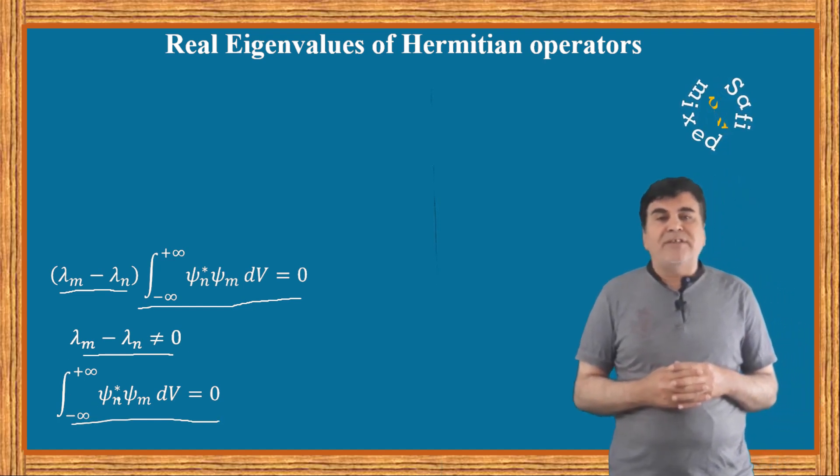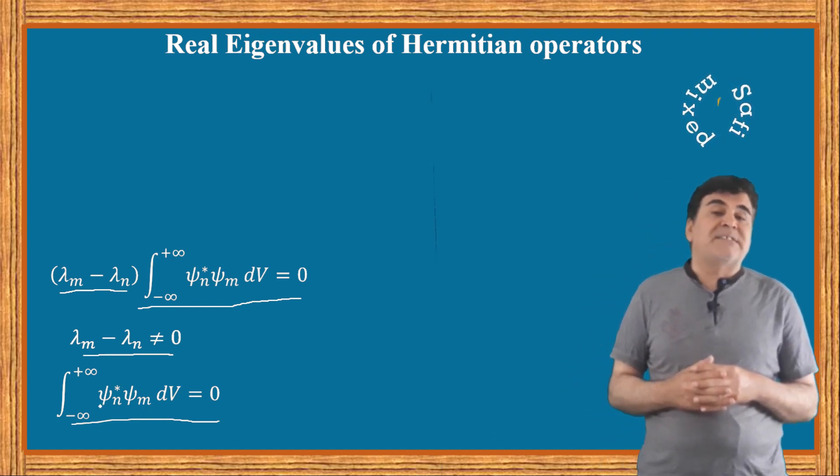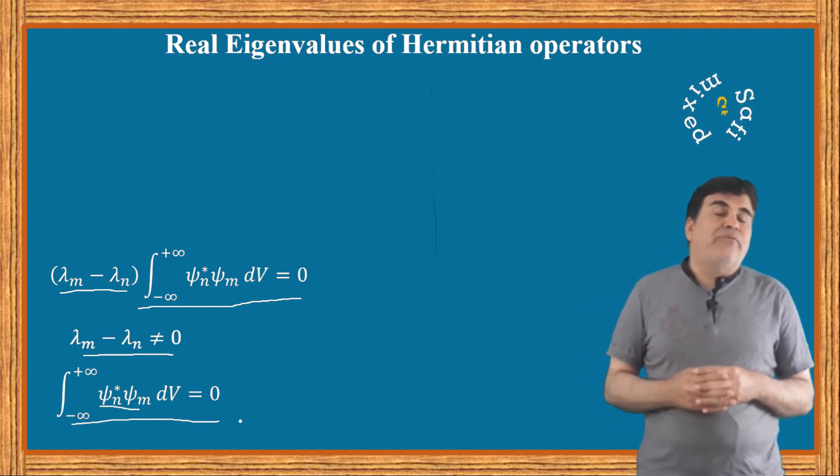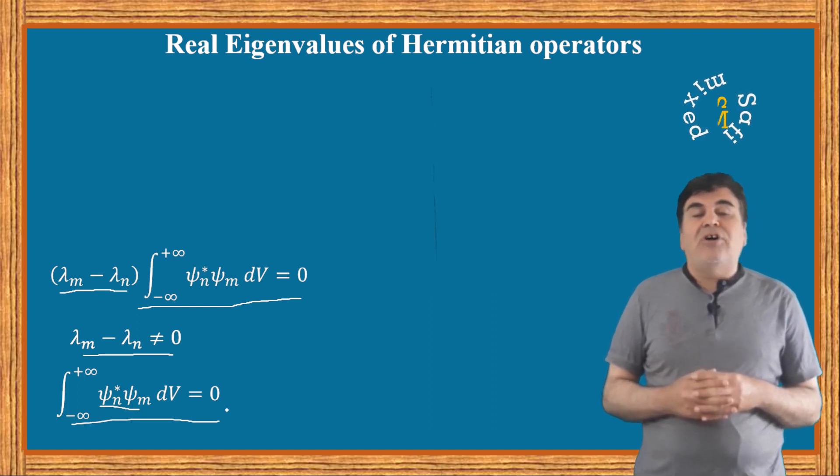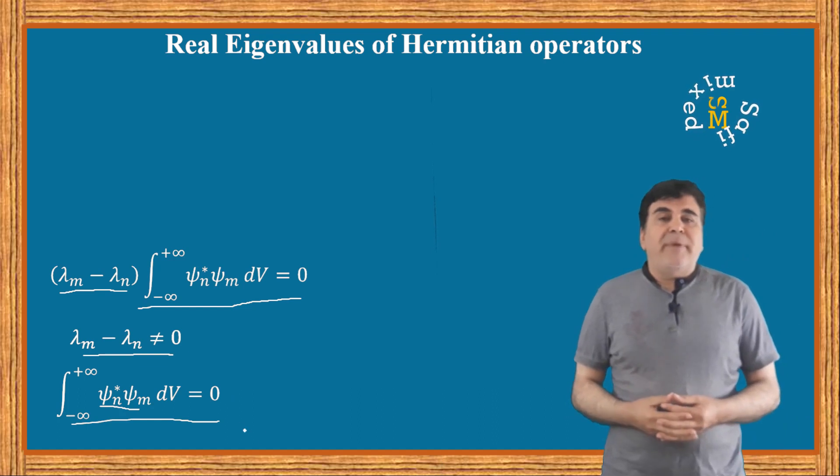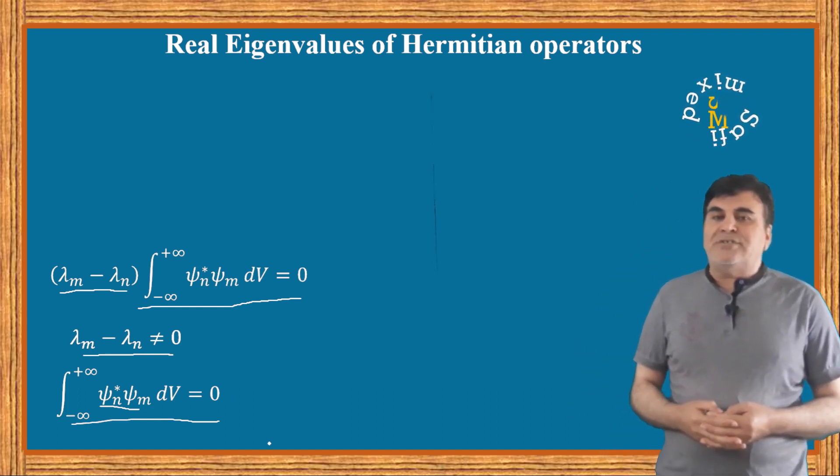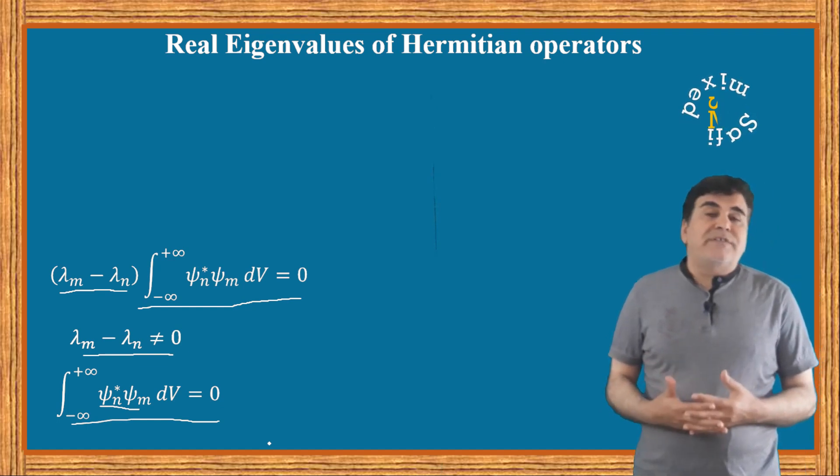This equation sets the orthogonality condition on the eigenfunctions of operators. That is, if the space integral of the product of a function with the complex conjugate of another eigenfunction is zero, the two functions are said to be orthogonal.